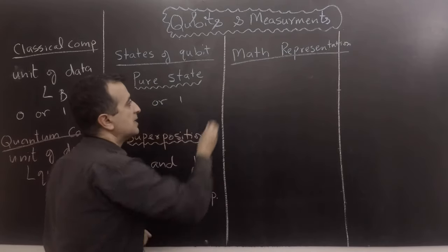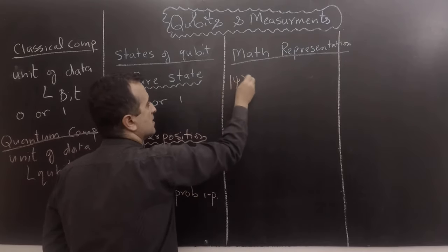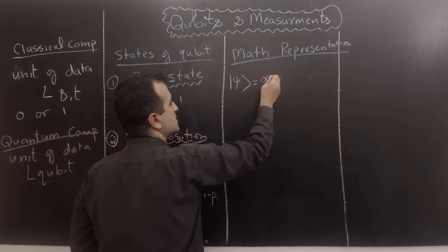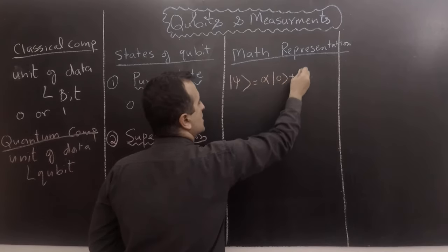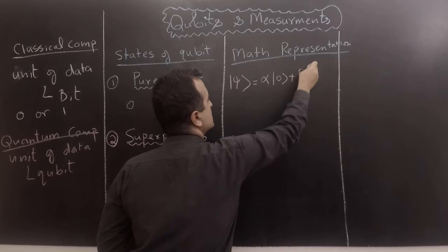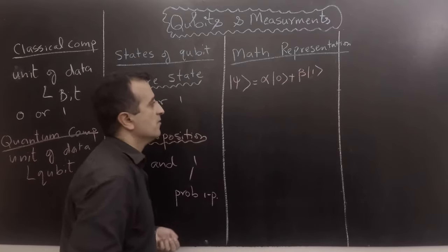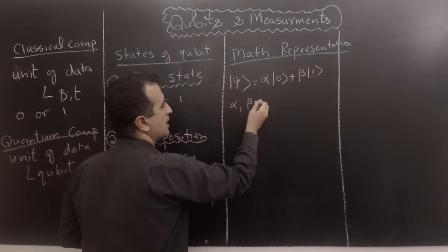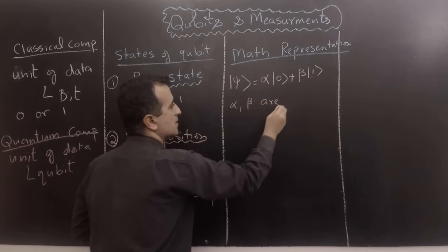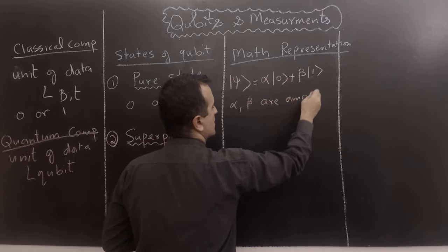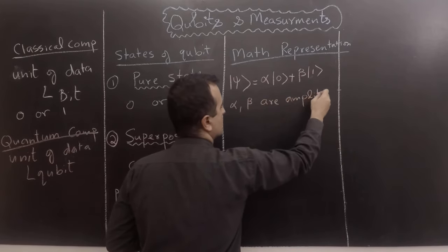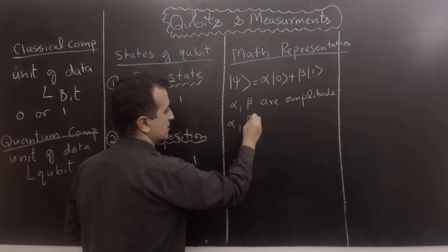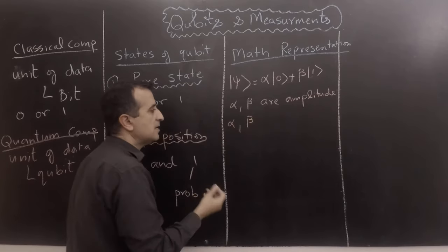A random qubit |ψ⟩ is equal to alpha times |0⟩ plus beta times |1⟩, where alpha and beta are amplitudes of the qubit. Alpha and beta are complex numbers that can even take negative values.